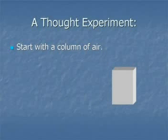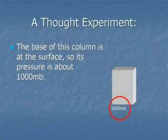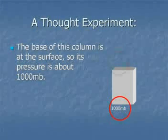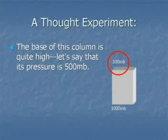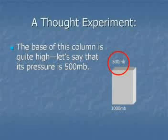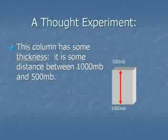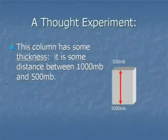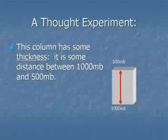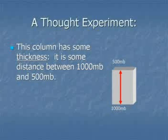Before we can talk about the thermal wind relationship, we have to do a little thought experiment. Suppose you started with a tall column of air. The bottom of this column is near the surface — let's give it a pressure of about 1,000 millibars — and the top of the column is at 500 millibars, so this column is about 5,000 to 6,000 meters thick. The thickness is a meteorological term describing the distance between the 500 and 1,000 millibar surfaces, though you could define thickness between any two pressure levels.